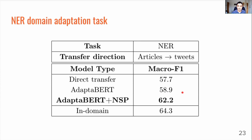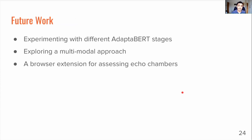There are many ways our research could be extended. We could experiment with adding different stages to AdapterBERT during fine-tuning beyond just next sentence prediction. We could also explore a multimodal approach — many links on Reddit aren't links to news articles but to photos, so we could build an image classifier to detect political bias and see if unifying that with an NLP classifier could outperform either individually. A more practical extension is to build a browser extension for assessing echo chambers — a phenomenon where users only see information that reinforces their own worldview. Using our classifiers, we could build a browser extension that scans a user's Facebook feed and determines whether all the content they're seeing is entirely left-wing or right-wing, alerting them that they may be in an echo chamber.